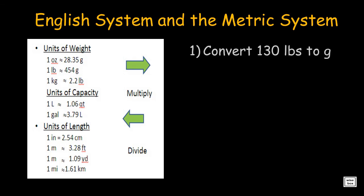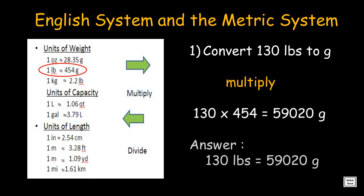Convert 130 pounds to grams. Notice from the table, it's left to right. Thus, you multiply. The answer is 59,020 grams.